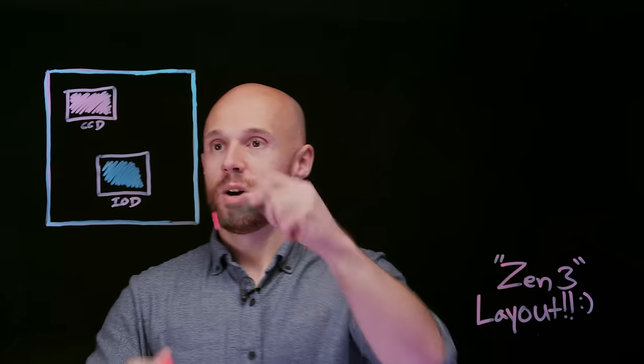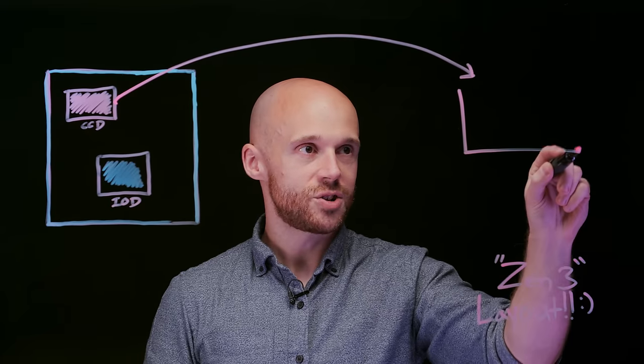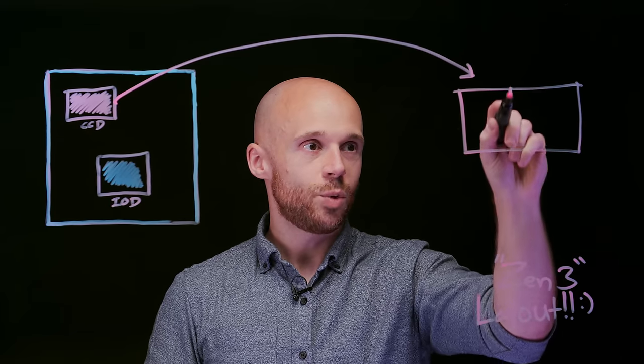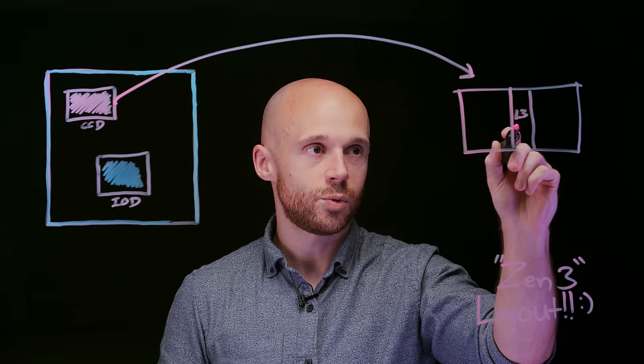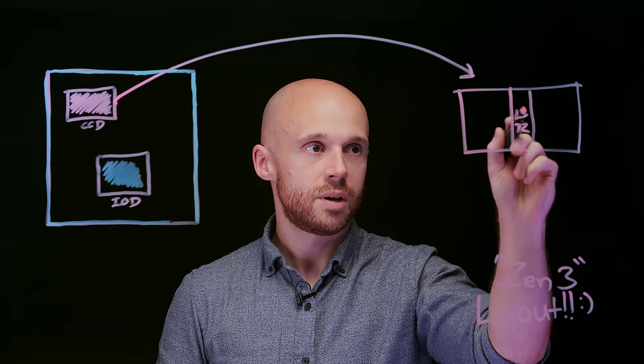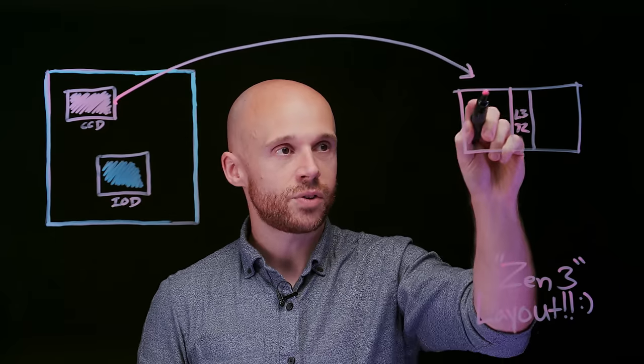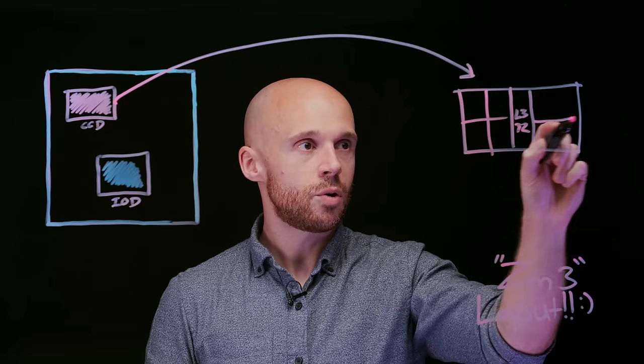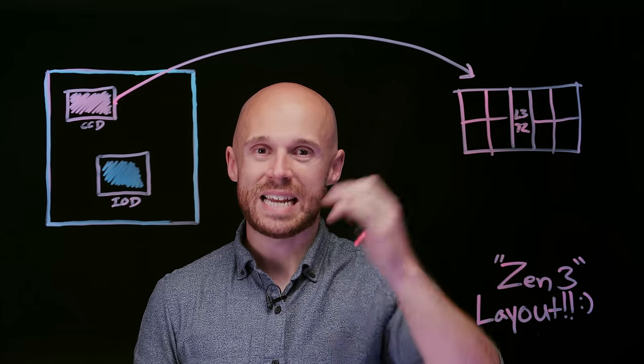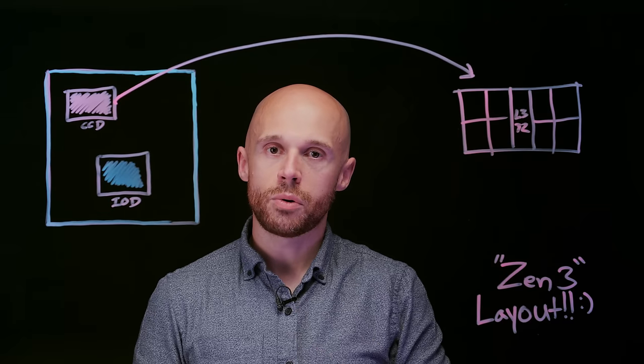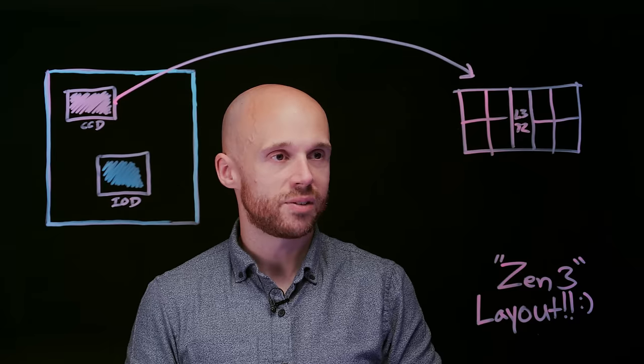So let's zoom in. We're going to draw an arrow over here and blow it up into a larger size. What you'll find in the middle is L3 cache. There's 32 megs of L3 cache, and then also four cores on each side. So you've got 32 megs of L3 cache and eight total CPU cores. That is how we are laid out today in a Zen 2 microprocessor.